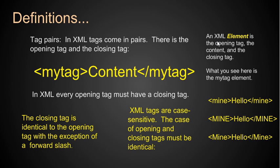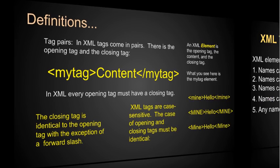Now let's define what an element is — this is very important because the word element is used over and over when talking about XML documents. An XML element is the opening tag, the content, and the closing tag. What you see here is the 'my tag' element — all of this is an XML element. The name of the element is the tag name. We can have elements with the same tag names if we wish.